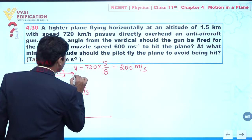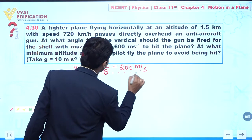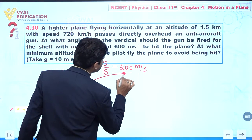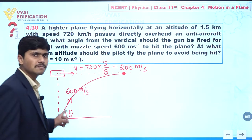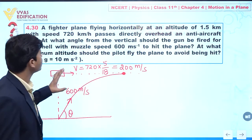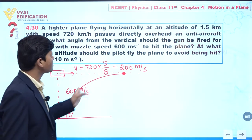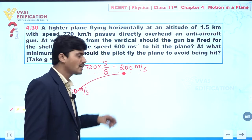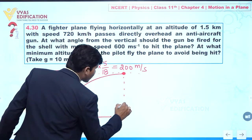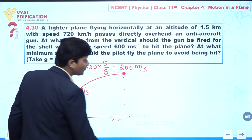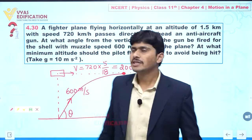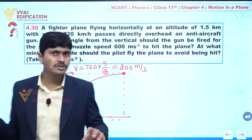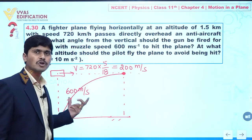Let us suppose this plane is going in the horizontal direction. At some point, this bullet fires and hits the aircraft at a certain position. This happens only when the distance covered by the aircraft is equal to the horizontal distance covered by this bullet. If we take the horizontal component of the bullet's velocity, this is 600 cosθ.